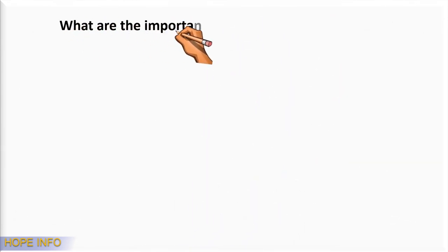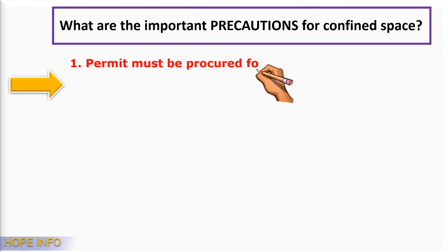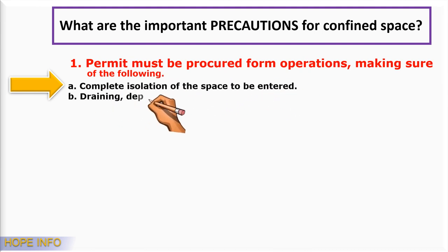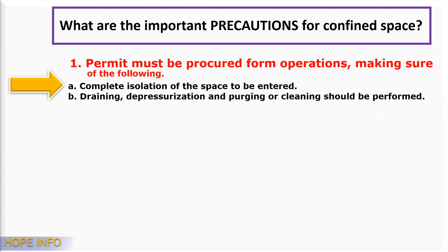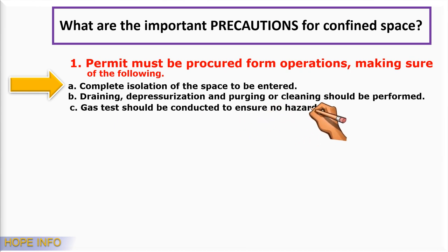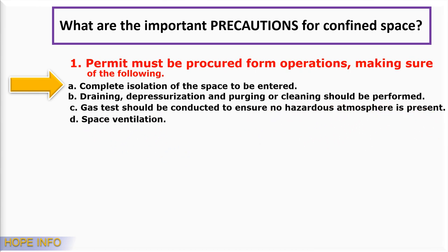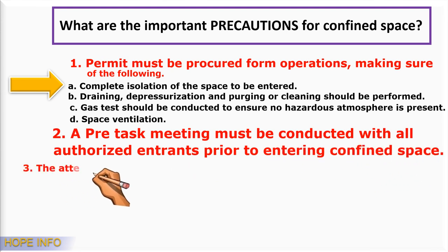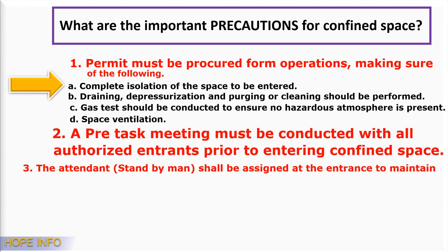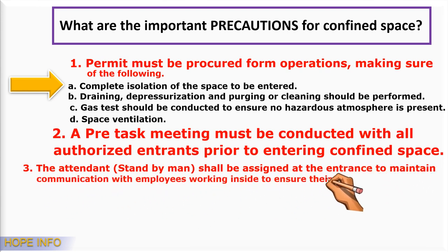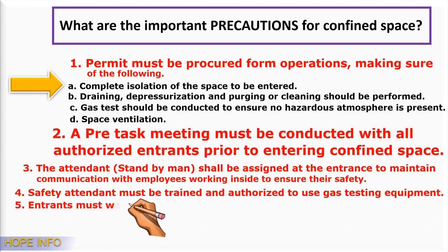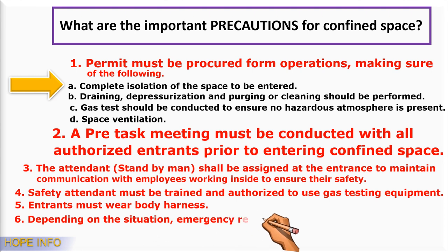What are the important precautions for a confined space? Number one: a permit must be procured for operations, ensuring complete isolation of the space to be entered; draining, depressurizing, and purging or cleaning should be performed; gas tests should be conducted to ensure no hazardous atmosphere is present, and ventilation provided. Number two: a pre-task meeting must be conducted with all authorized entrants prior to entering the confined space. A standby man shall be assigned at the entrance to maintain communication with employees working inside. Safety attendants must be trained and authorized to use gas testing equipment. Entrants must wear a body harness. Depending on the situation, an emergency rescue team may be put on standby.